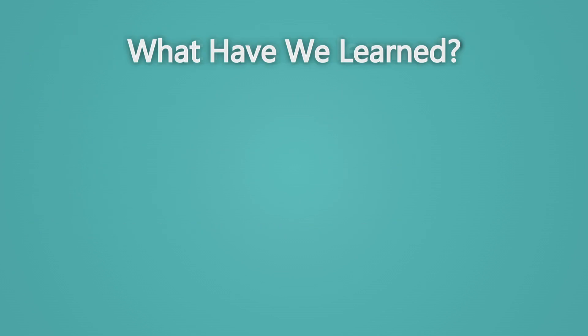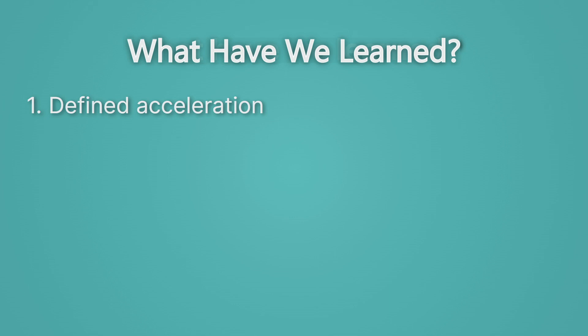Let's review what we've learned. We've defined acceleration — it's a change in our speed with a direction, so getting faster, slower, or turning are all acceleration. We've introduced the units of acceleration, which uniquely have two units for time in the denominator. And lastly, we've calculated acceleration.